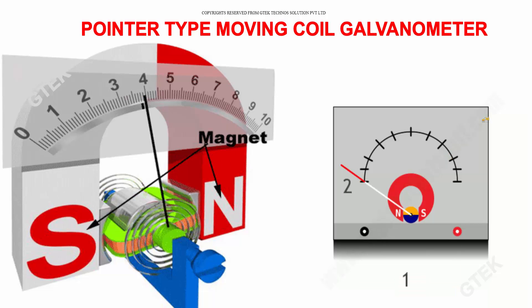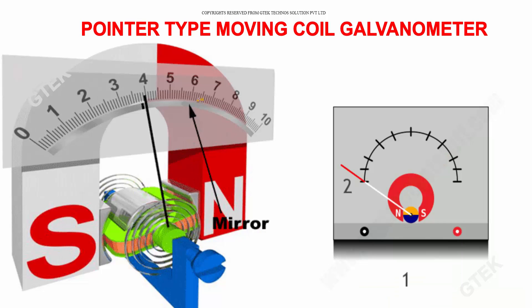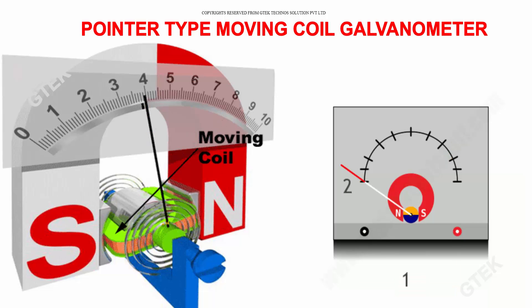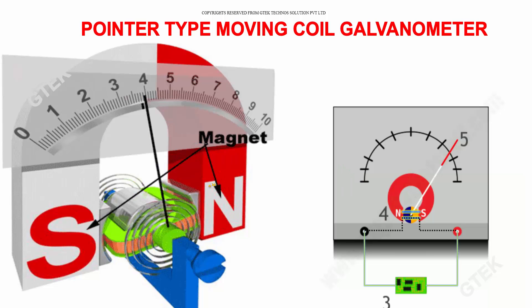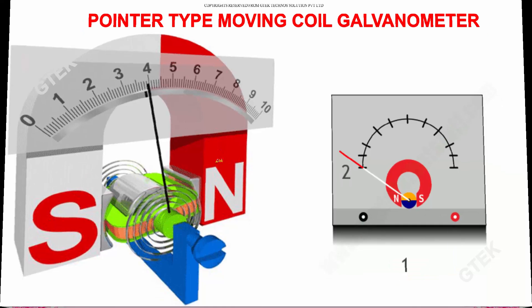This is your pointer type moving coil galvanometer. It has a spring, a dial, a mirror, magnets, a pointer, and a moving coil. These are the parts of a moving coil galvanometer — it's a pointer type.